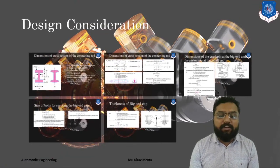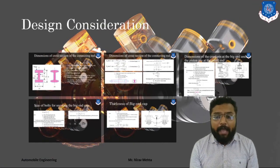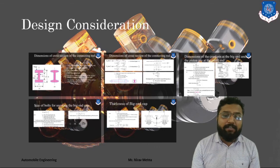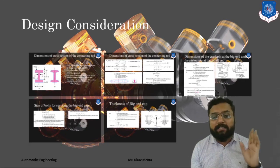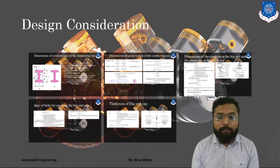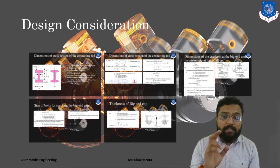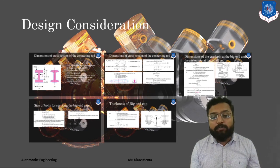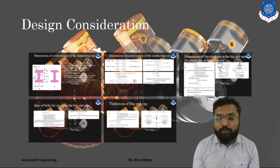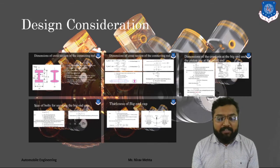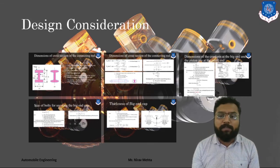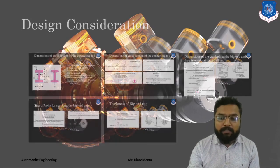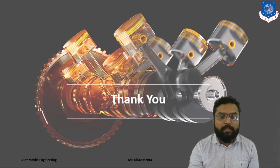This was our design consideration and procedure for the connecting rod. We have designed this component in four parts: cross-section area, big end and small end bearing dimensions, bolt dimensions, and thickness of the big end cap. I hope you have understood this very well. If you have any doubt regarding any section, you can directly contact me. Thank you very much.